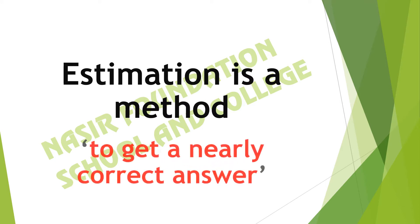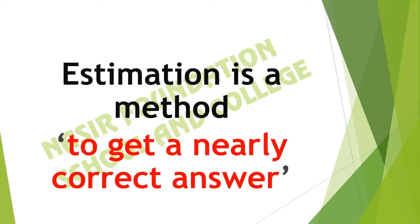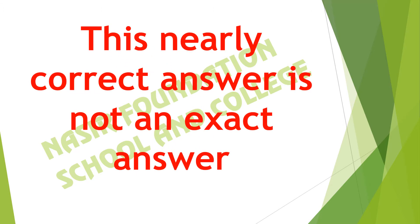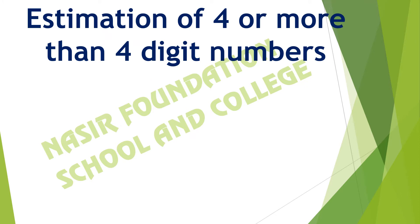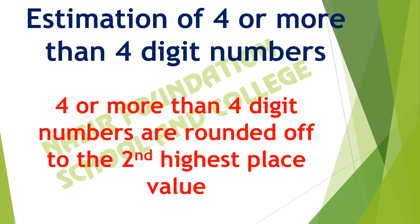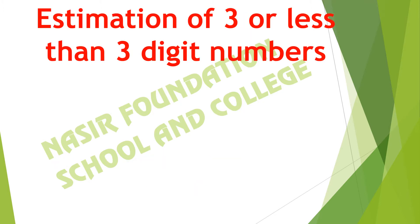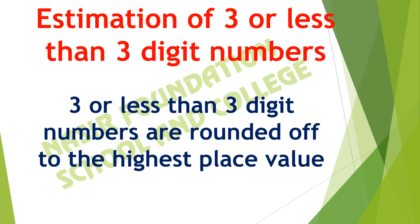Estimation is a method to get a nearly correct answer. This nearly correct answer is not an exact answer. For four or more than four digit numbers, they are rounded off to the second highest place value. For three or less than three digit numbers, they are rounded off to the highest place value.